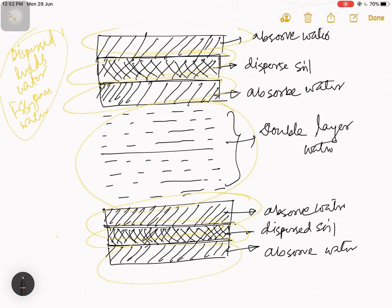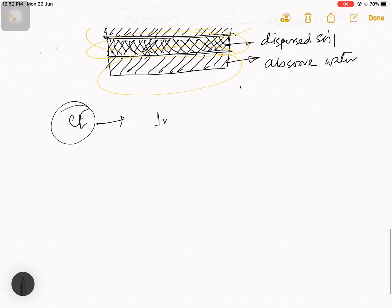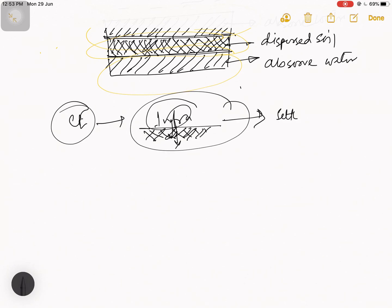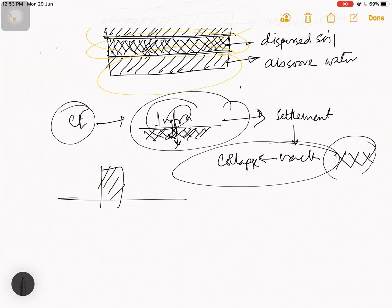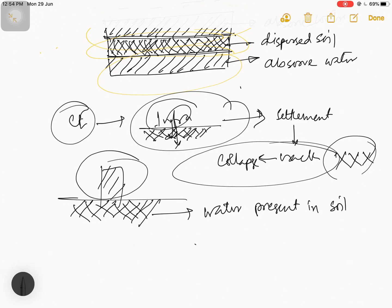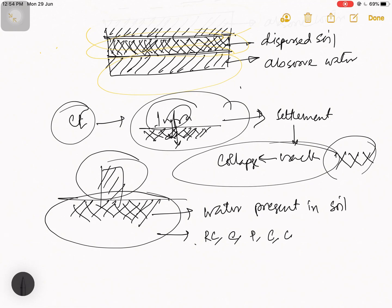That is why, in dispersed soil structure, they can absorb or hold water. As civil engineers, we have to build infrastructure in the soil. If we do not check the soil properly and construct infrastructure, due to the load of the structure, if the soil is not proper, there will be some settlement. If settlement occurs, cracks will be generated, and possibly collapse may happen. That is why, before construction, we must check if there is a chance of settlement or water present in the soil. For this check, we verify relative compaction, void ratio, permeability, compressibility, dry density, and many other things.